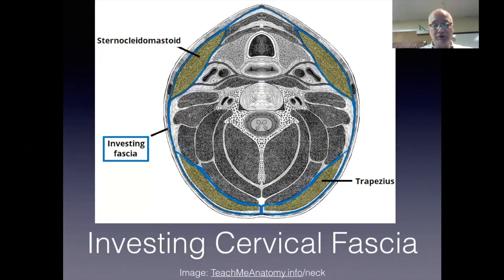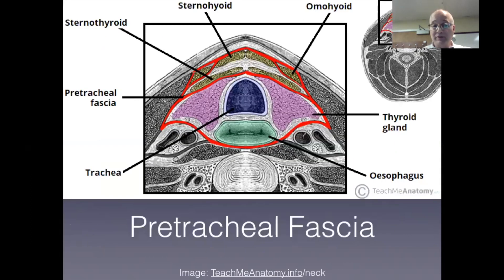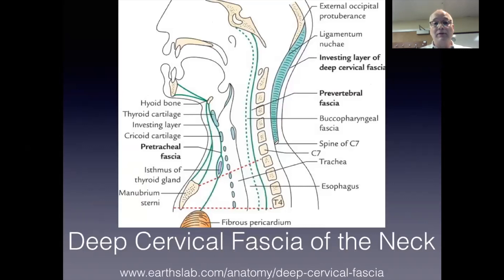The first layer of deep cervical fascia is the investing layer, surrounding the neck and completely encasing the sternocleidomastoid and trapezius muscles. The next layer is the pretracheal fascia, which surrounds the thyroid gland, the trachea, the esophagus, and the strap muscles. This is a nice sagittal illustration demonstrating that these fascial planes extend from the skull base through the neck and well into the chest.